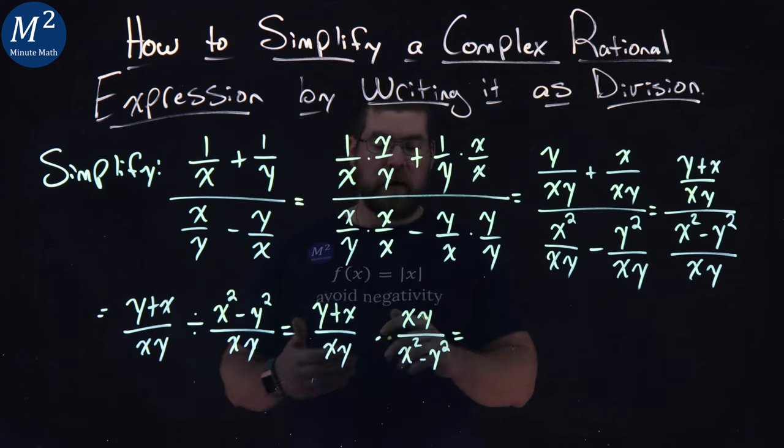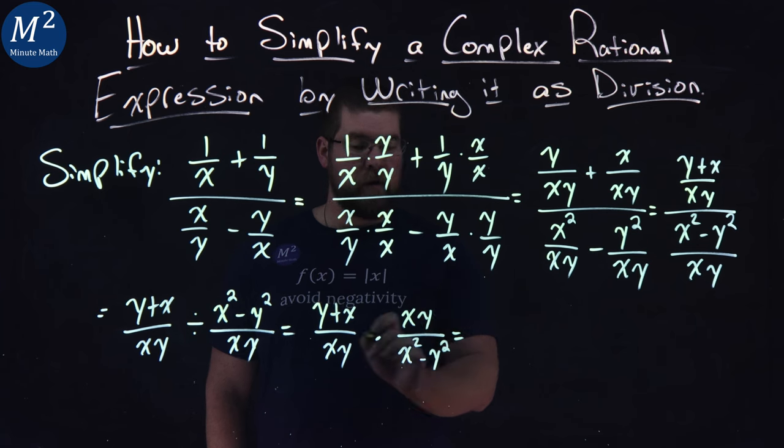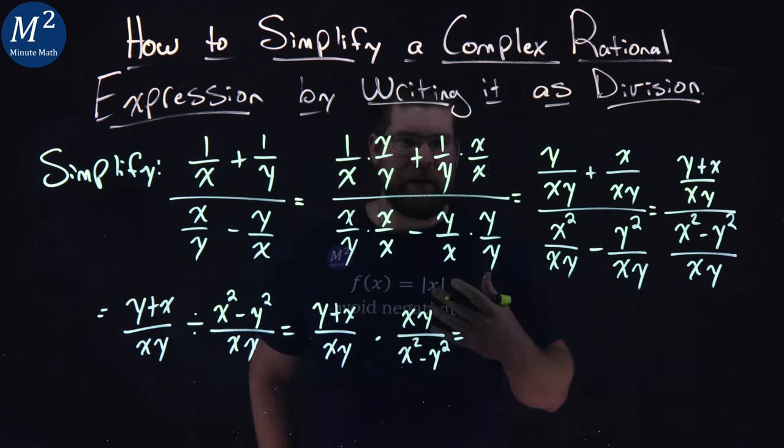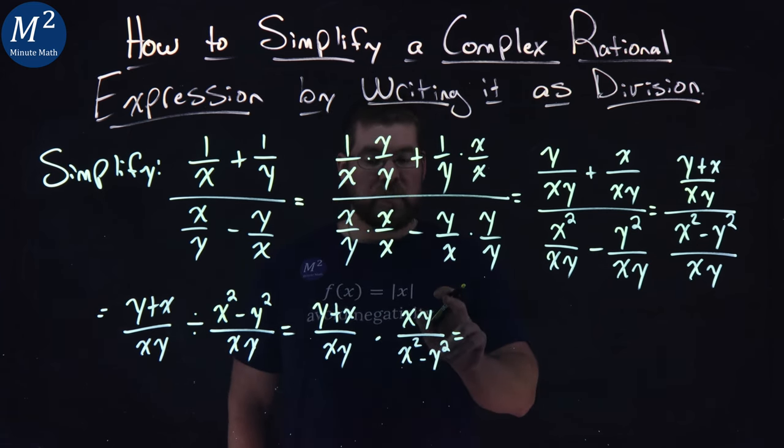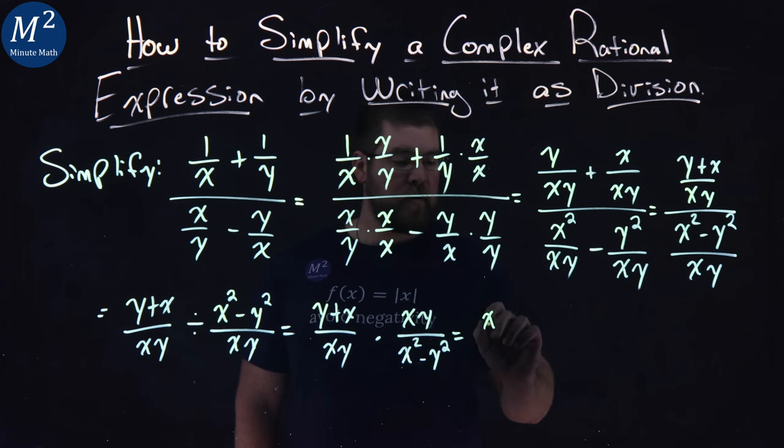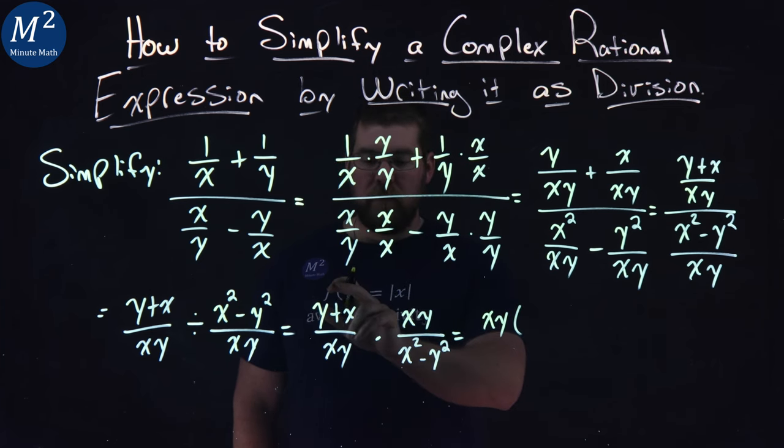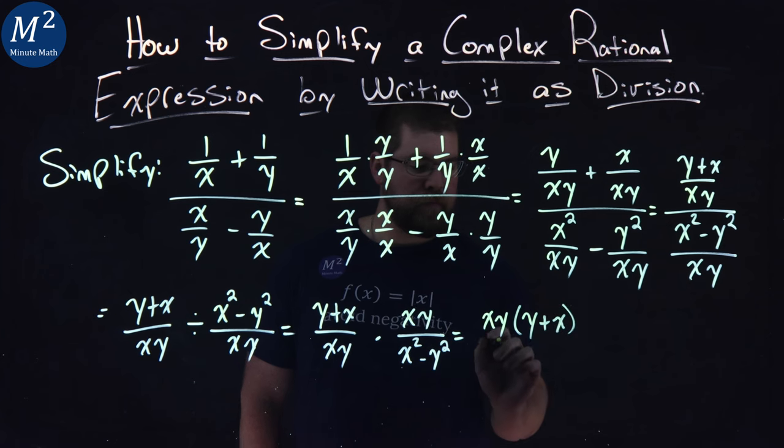From here, we can combine by multiplying across, right? Across the numerator, across the denominator. But I'm going to keep everything factored as much as possible. Let's put our xy's first. So, xy comes out here. xy times y plus x. All over. xy comes first.